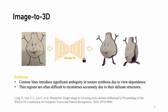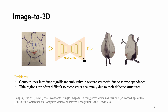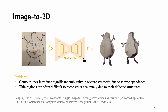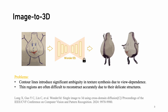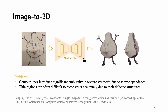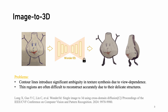An alternative solution is to reconstruct a 3D model from a character drawing as a proxy and then re-target 3D motion data onto it. However, existing image-to-3D methods do not work well for amateur character drawings. First, contour lines introduce significant ambiguity in texture synthesis due to view dependence. Second, thin regions are often difficult to reconstruct accurately due to their delicate structures.